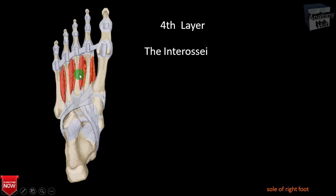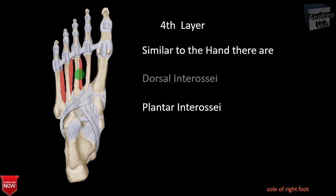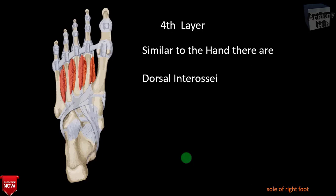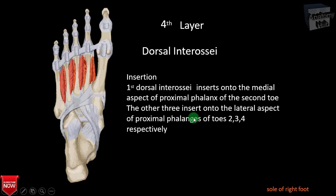The fourth layer consists of the interossei muscles, similar to those in the hand, comprising both dorsal and plantar interossei. There are four bipennate dorsal interossei arising by two heads from adjacent metatarsal bones. The first dorsal interosseous inserts into the medial aspect of the proximal phalanx of the second toe, and the other three insert into the lateral aspects of the proximal phalanges of the second, third, and fourth digits respectively. They help in abduction of the toes relative to the second toe.